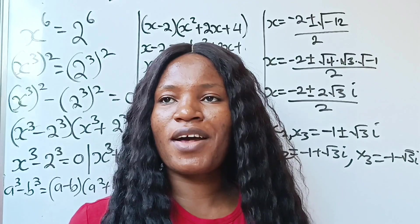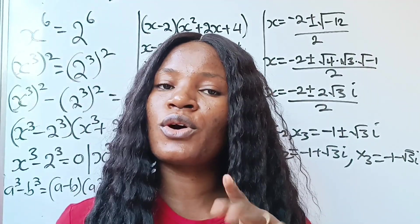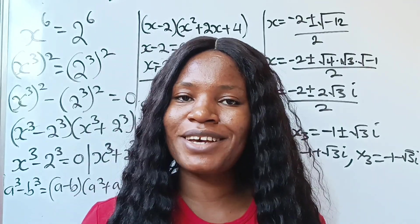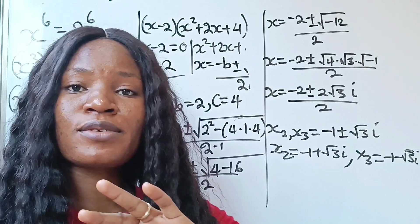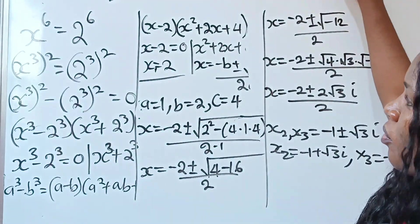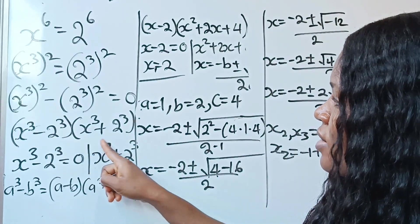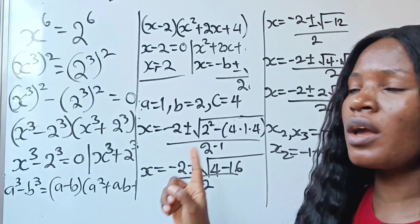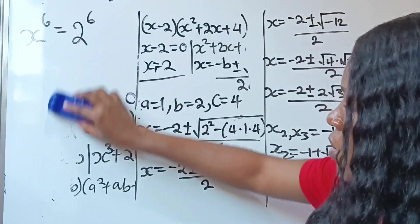If this is the first time you are on this channel, please subscribe and turn on your notification bell so you will be notified any time I upload a new video. We have gotten three values of x. Now we move to the second case: x to the power of 3 plus 2 to the power of 3 equals 0.